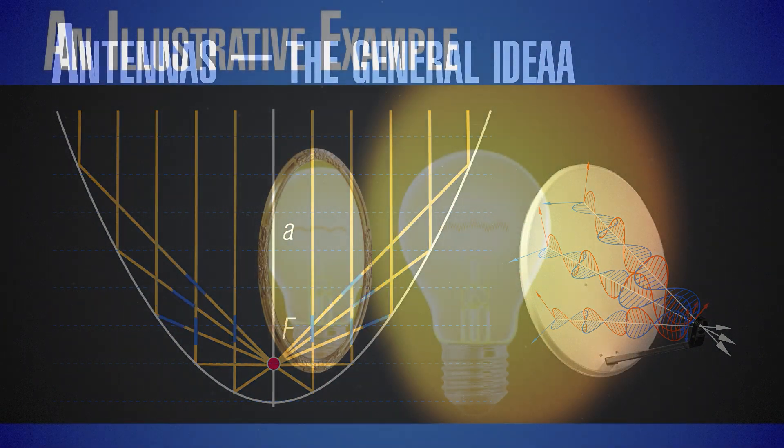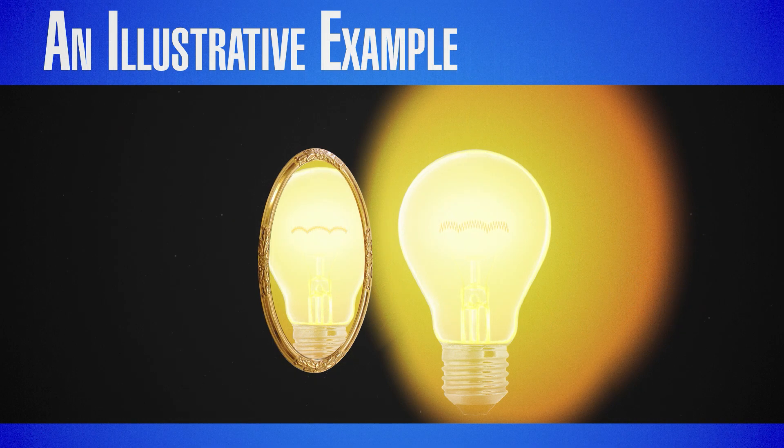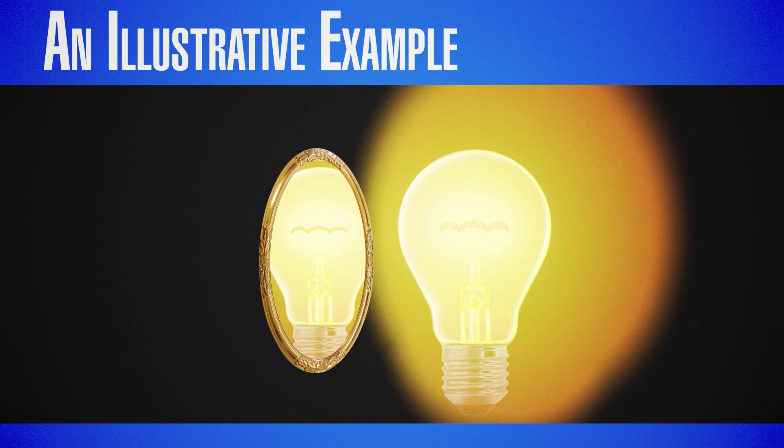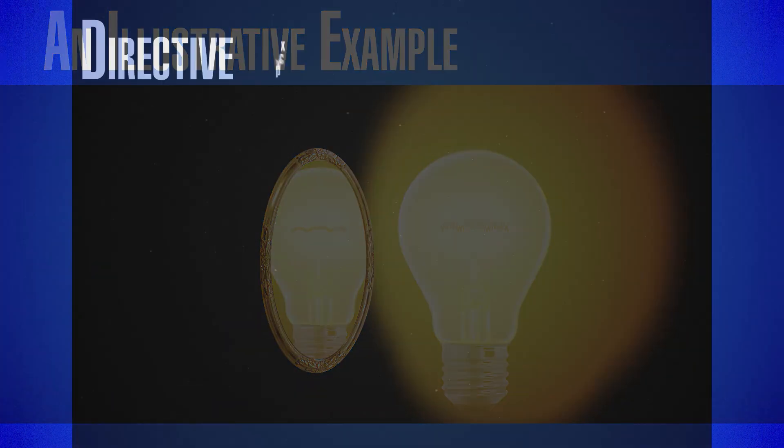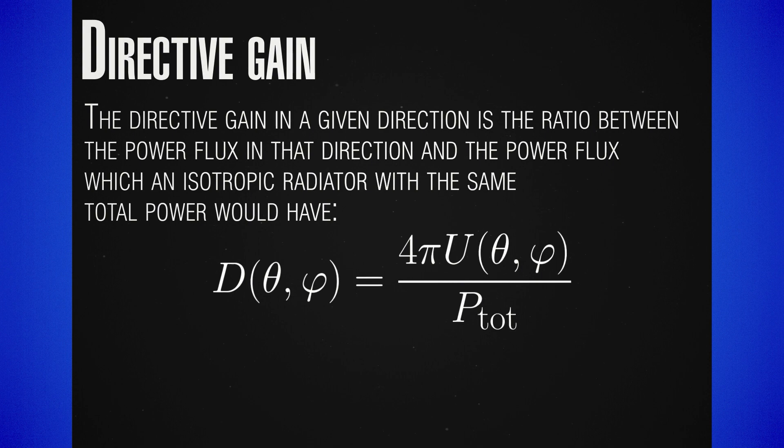But how do we quantify this? We can say that a light bulb with a mirror to the one side is twice more directive than a light bulb with no mirror, since the same power is focused on only half of a sphere. But this tells us nothing about general antennas. To make things more precise, we can introduce a quantity known as directive gain D, which depends on the standard spherical angles theta and phi. This quantity is simply the ratio between the power flux of our antenna and the power flux of an antenna with the same total power that emits isotropically.